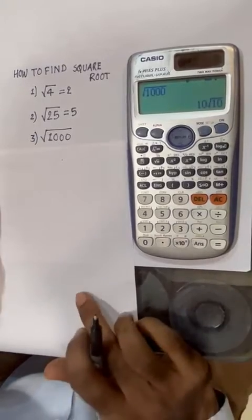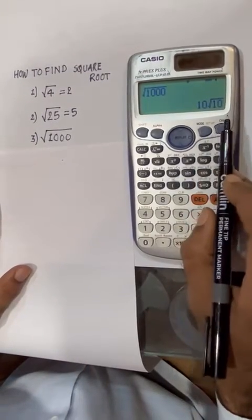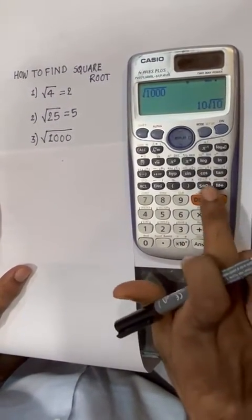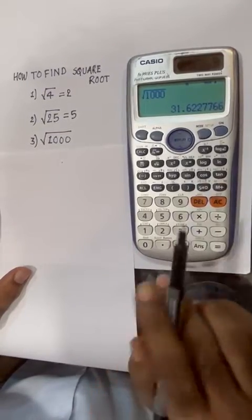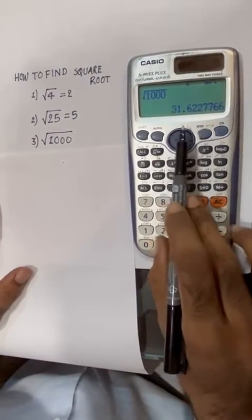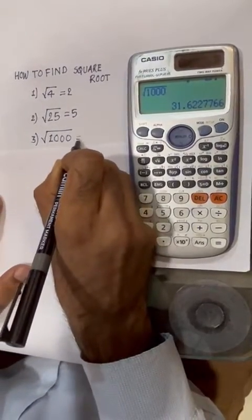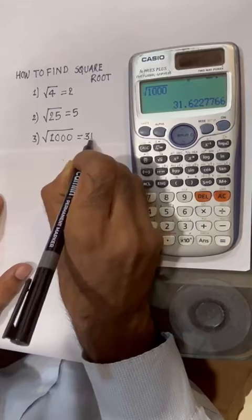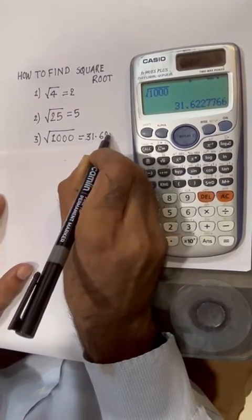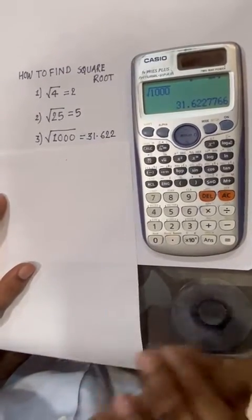Press equals. Here is 10 root 10. Now press SD and you will get the number 31.622. Square root of 1000 equals 31.622. Thank you friends.